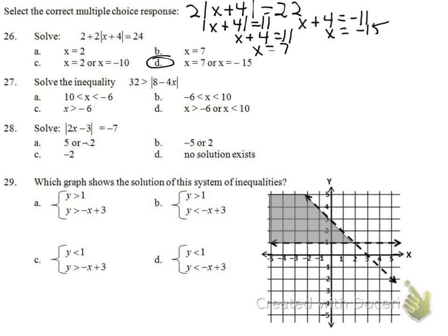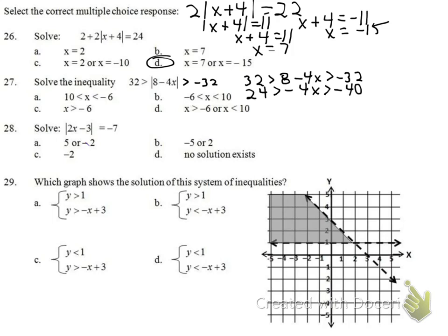Number 27: 32 < |8 - 4x|. Writing as a compound inequality: -32 > 8 - 4x and 8 - 4x < 32... working through by subtracting 8 and dividing by -4 (flipping the inequality): x > -6 and x < 10. The answer is D.